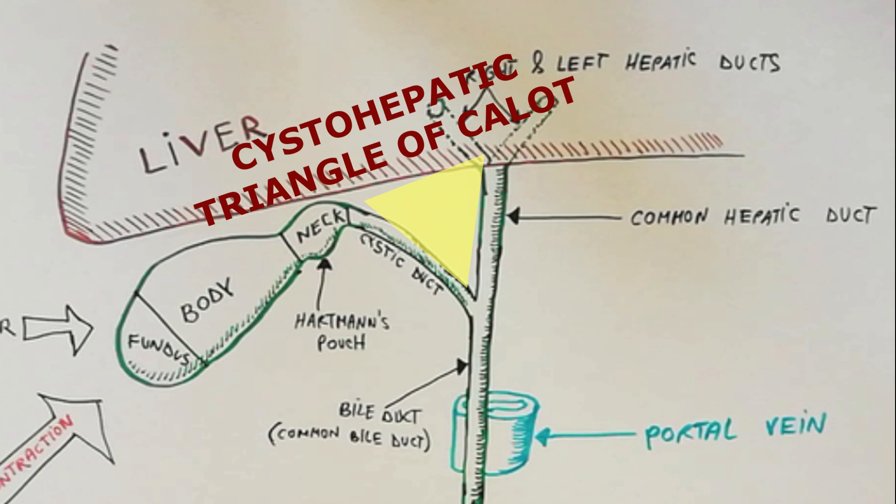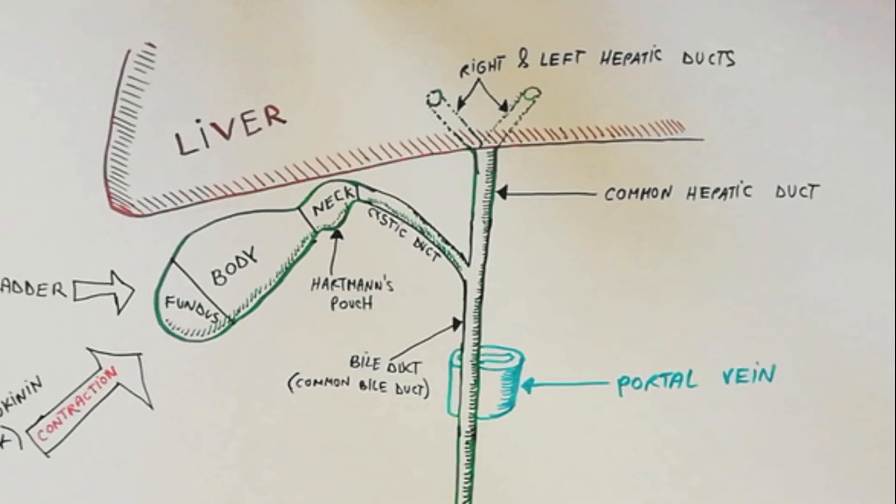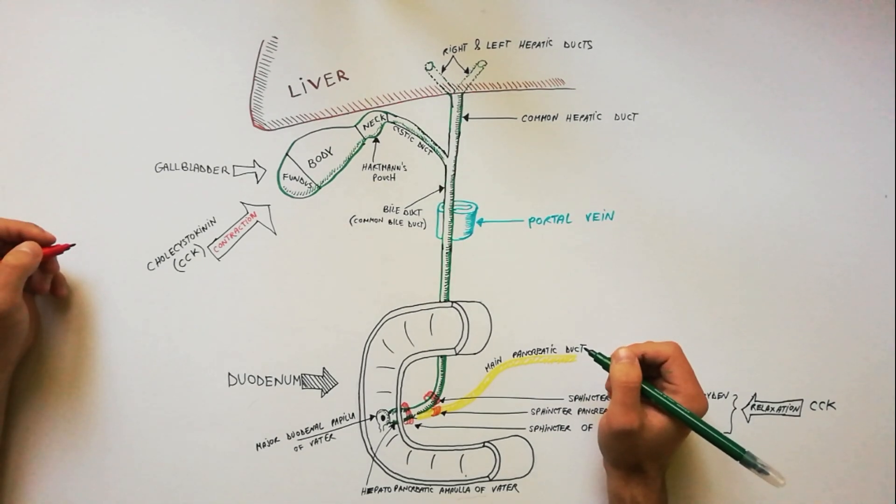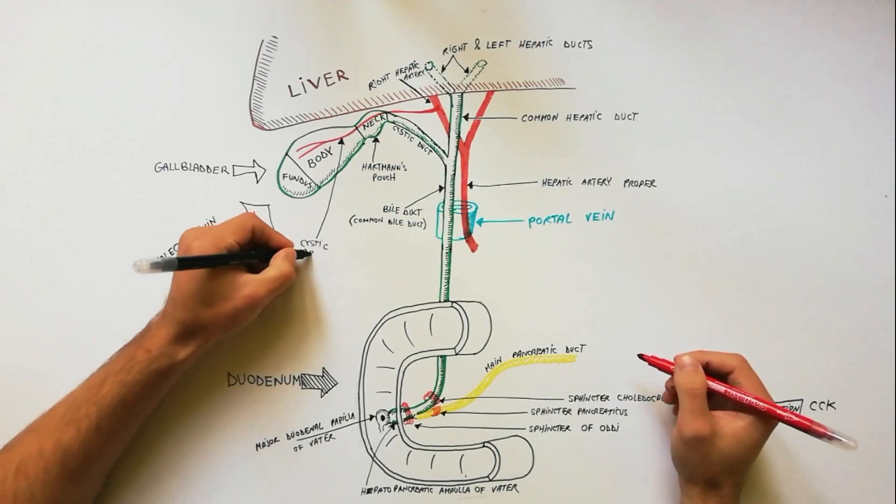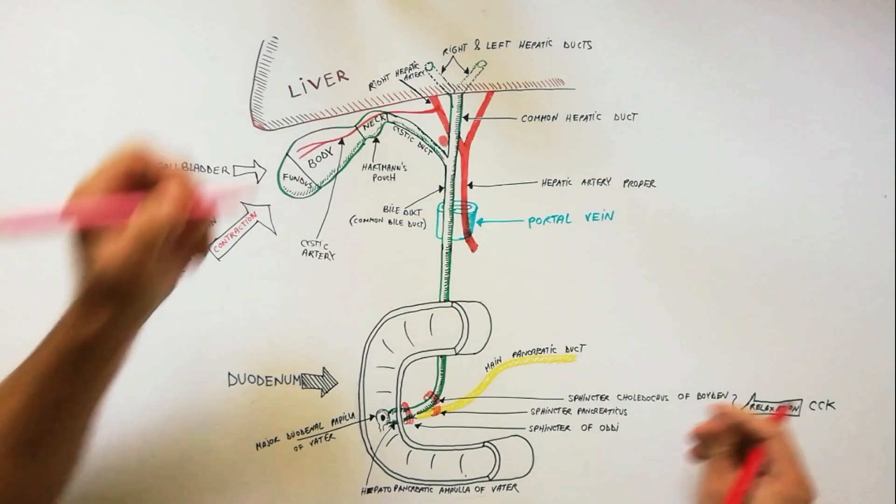The apex of triangle faces downward between the cystic and common hepatic ducts. The contents of the triangle are right hepatic artery, cystic artery, and cystic lymph node of Lund.